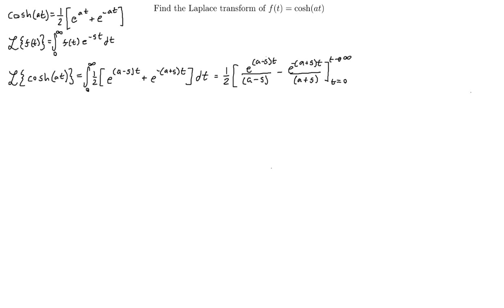So basically, we're going to have the requirement that s is greater than a in this case. So basically, what happens now is we just evaluate our limits. Well, since we have this guy, our first limit as t approaches infinity of both of these is just going to be zero.